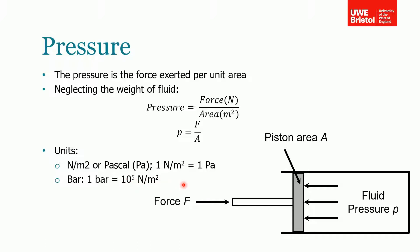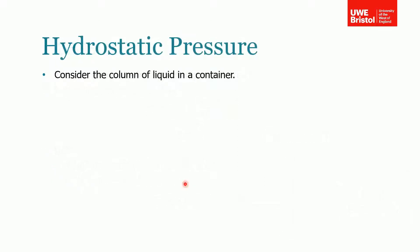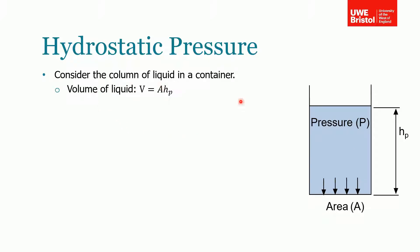Now hydrostatic pressure. Before we go through this, just want to consider this column of liquid in a container. What we want to know is what is the pressure that this liquid is exerting on the bottom of this container. The reasons for this will become more clear as we go through the lecture why we're interested in hydrostatic pressure. But let's just consider it. We've got this liquid in here at some height hp, but the actual height doesn't matter. Let's first look at the volume of liquid in this cylinder. The volume is equal to the area times the height. That gives us the volume.